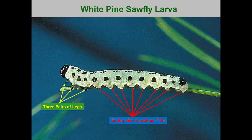The common sawflies found feeding on plant foliage in our landscapes usually have eight pairs of prolegs. Unfortunately, some sawfly larvae have really short prolegs and you have to inspect them with a hand lens to determine the number of prolegs present.